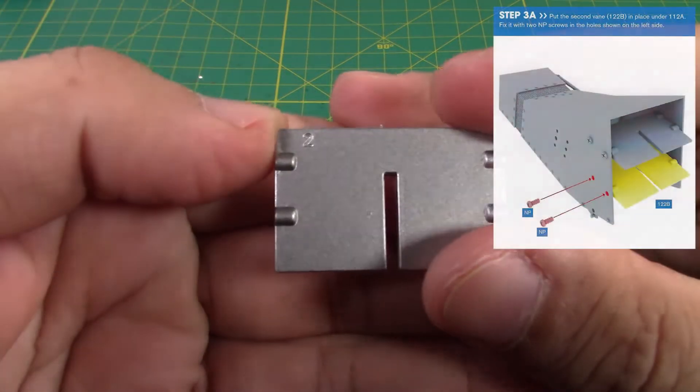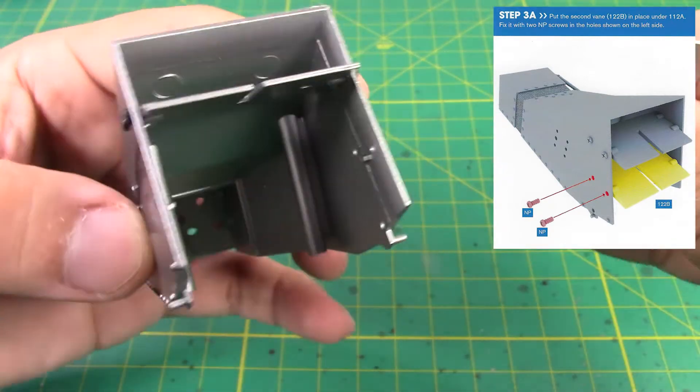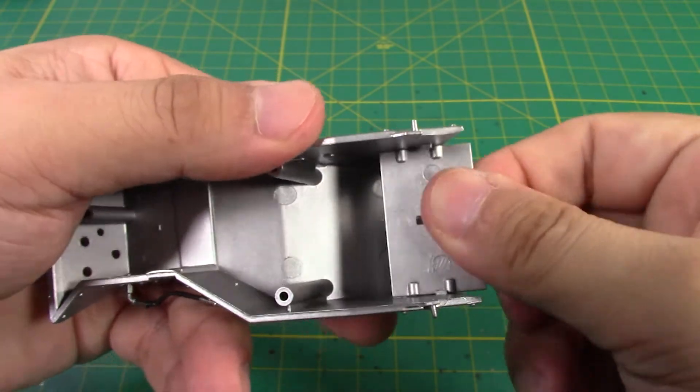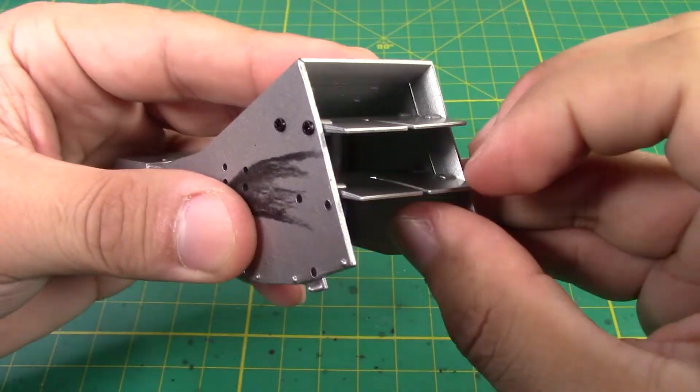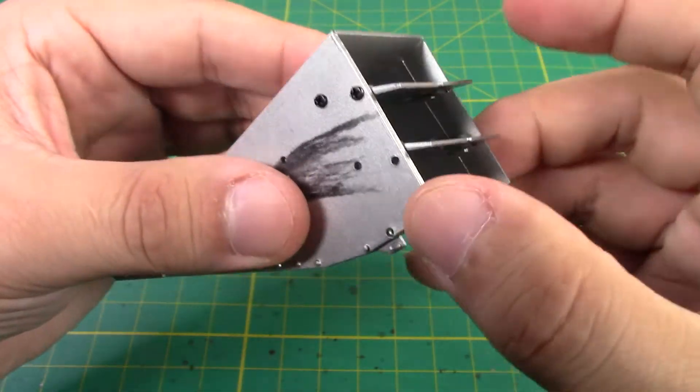And next we're going to take vane number two and that one's going to go right in the middle. There we go, and we're going to keep adding some more NP screws to the sides.